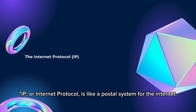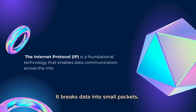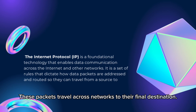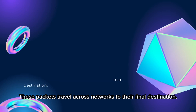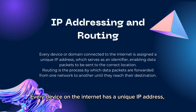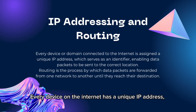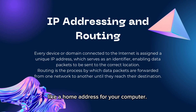IP, or Internet Protocol, is like a postal system for the Internet. It breaks data into small packets, each carrying information about its source and destination. These packets travel across networks to their final destination. Every device on the Internet has a unique IP address, like a home address for your computer.